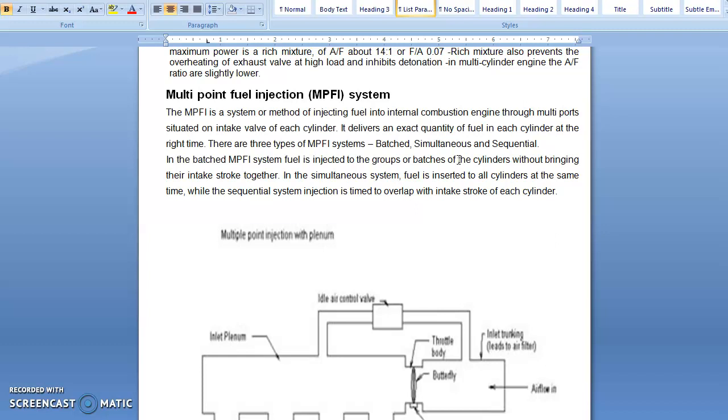There are three types of MPFI system. In the batch MPFI system, fuel is injected through groups or batches. The main purpose of the multipoint fuel injection system is to supply a proper ratio of petrol and air to the cylinder. The system functions under two basic arrangements: number one, port injection, and number two, throttle body injection.